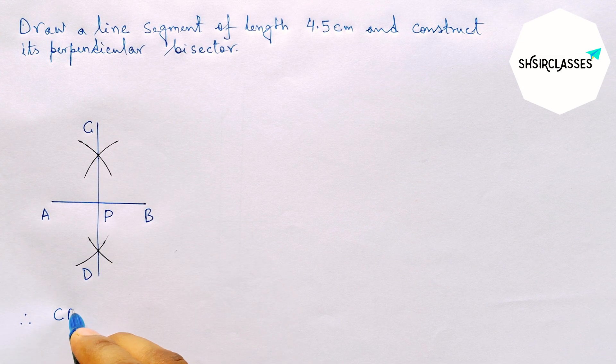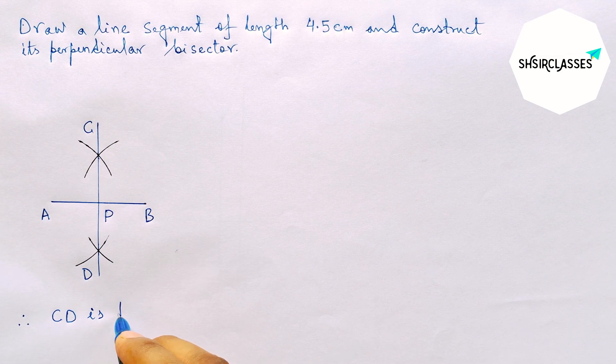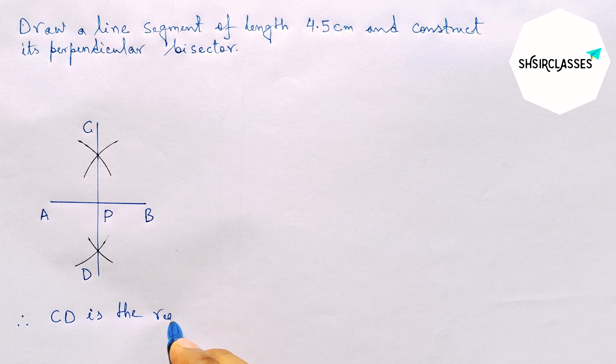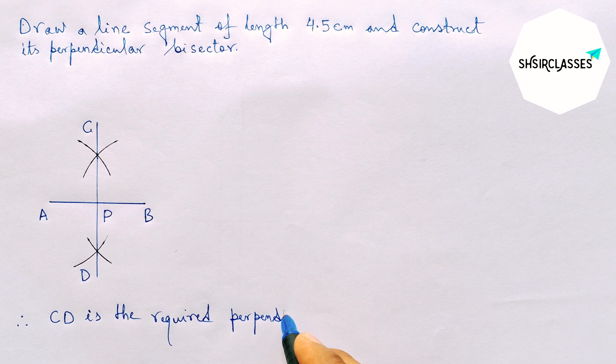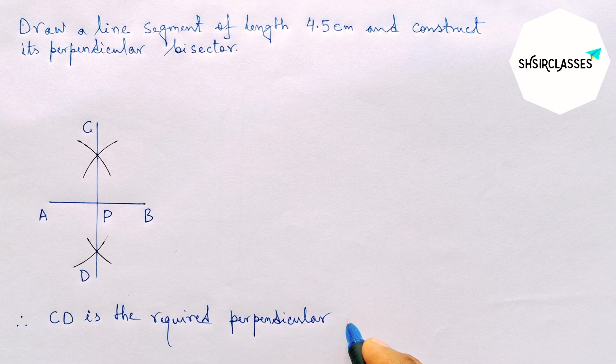Therefore, CD is the required perpendicular bisector to the line AB. And by this way you can construct a perpendicular bisector to a line segment.